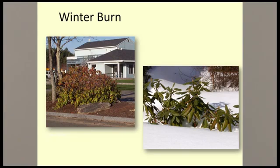Here's another example with symptoms at the top of the plant. The upper half of the rhododendron has brown leaves — this is typical winter burn and desiccation. The leaves remain green where the level of snow provided protection from the wind and sun. The leaves above the snow line became burned and desiccated. Winter burn can be more severe in winters with snow remaining into late March and April.